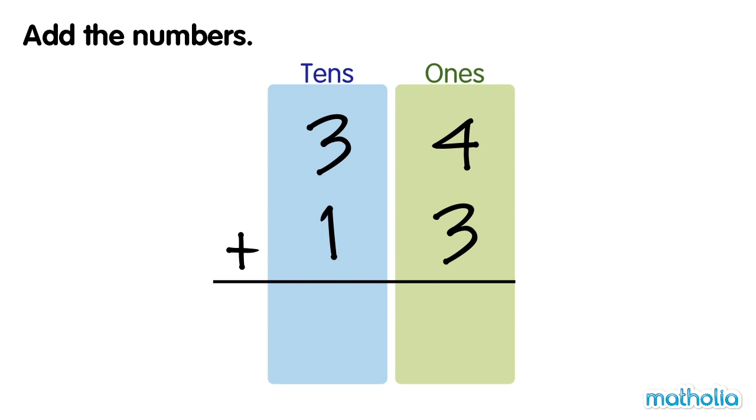Add the numbers. Let's start by adding the ones. 4 ones plus 3 ones equals 7 ones.